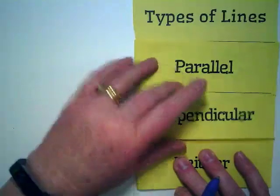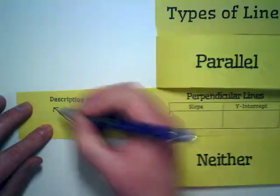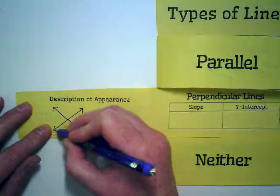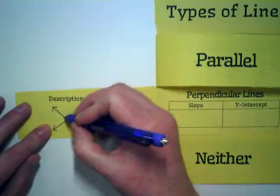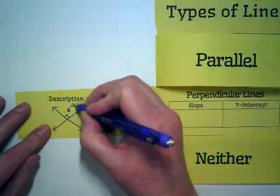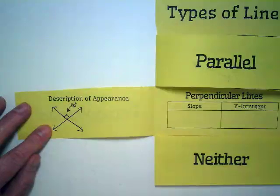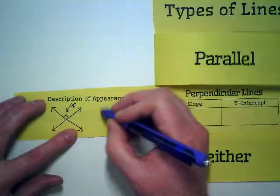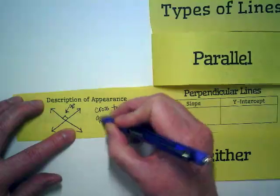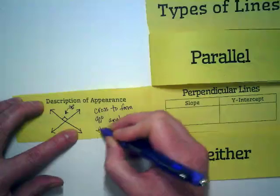So for perpendicular, let's open that flap. Perpendicular lines. Notice I always put arrows on my lines. We're trying to show that they go on and on. Perpendicular lines meet with a 90 degree angle. And if it forms one 90 degree angle, it's gonna form four. It always has to if it's perpendicular. So the description in words is they cross to form 90 degree angles at their intercept.